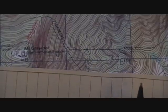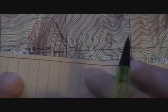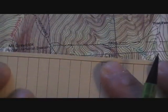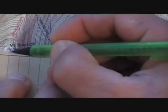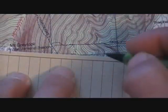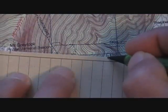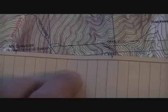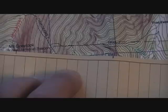Another way to measure straight line distance is to take a piece of paper — I've ripped this out of my rite-in-the-rain notebook. Get it set up along that straight line and mark the edge of my hilltop here to our X on this other hilltop. Then take that paper and go to the bar scale at the bottom of the map.